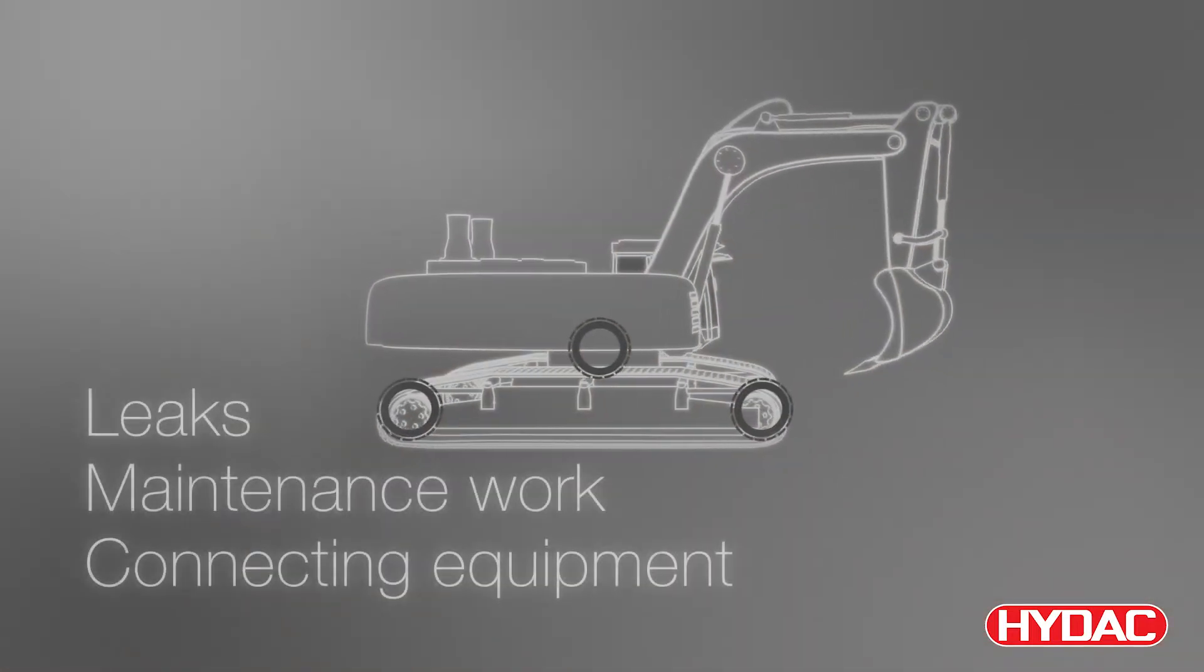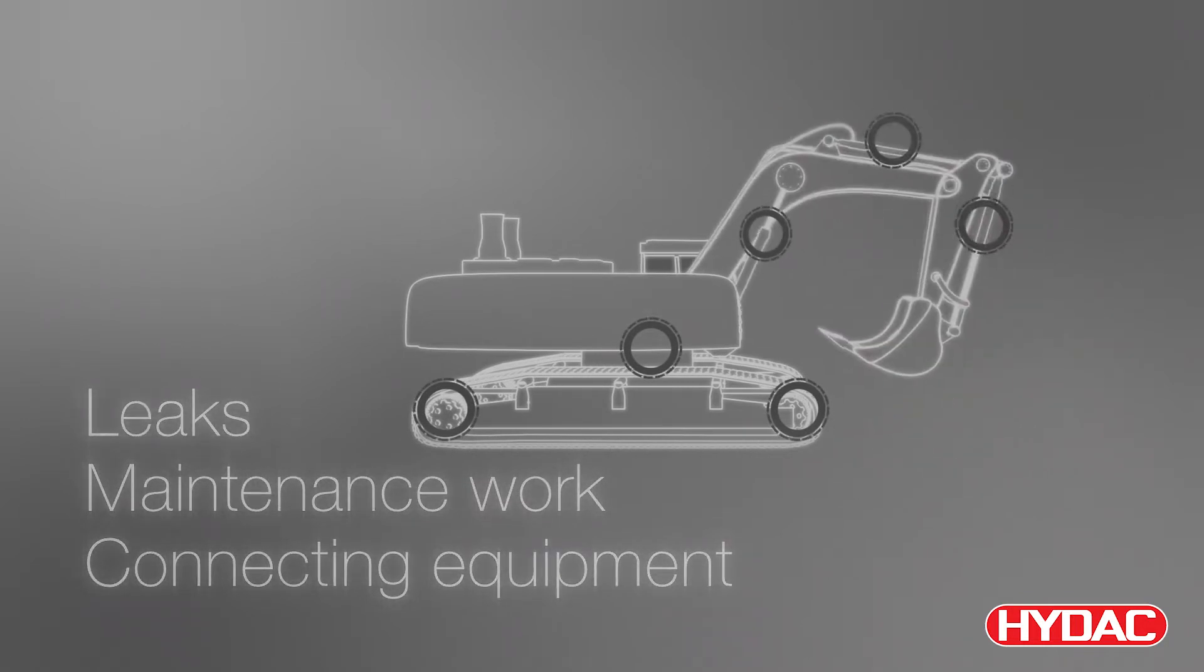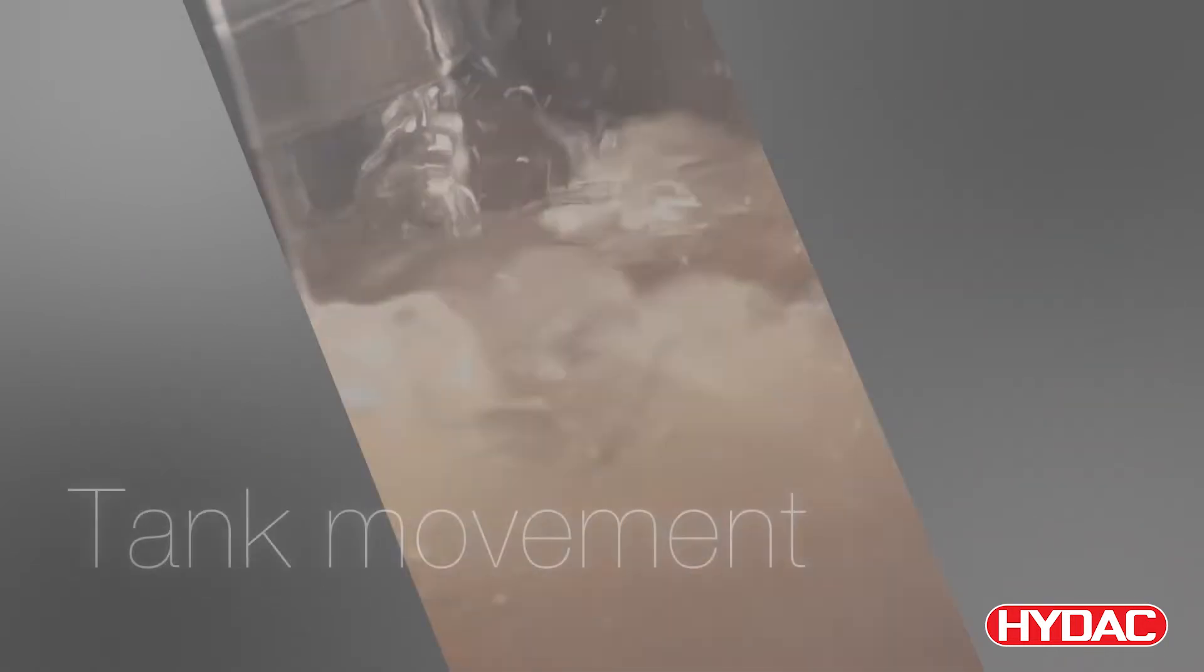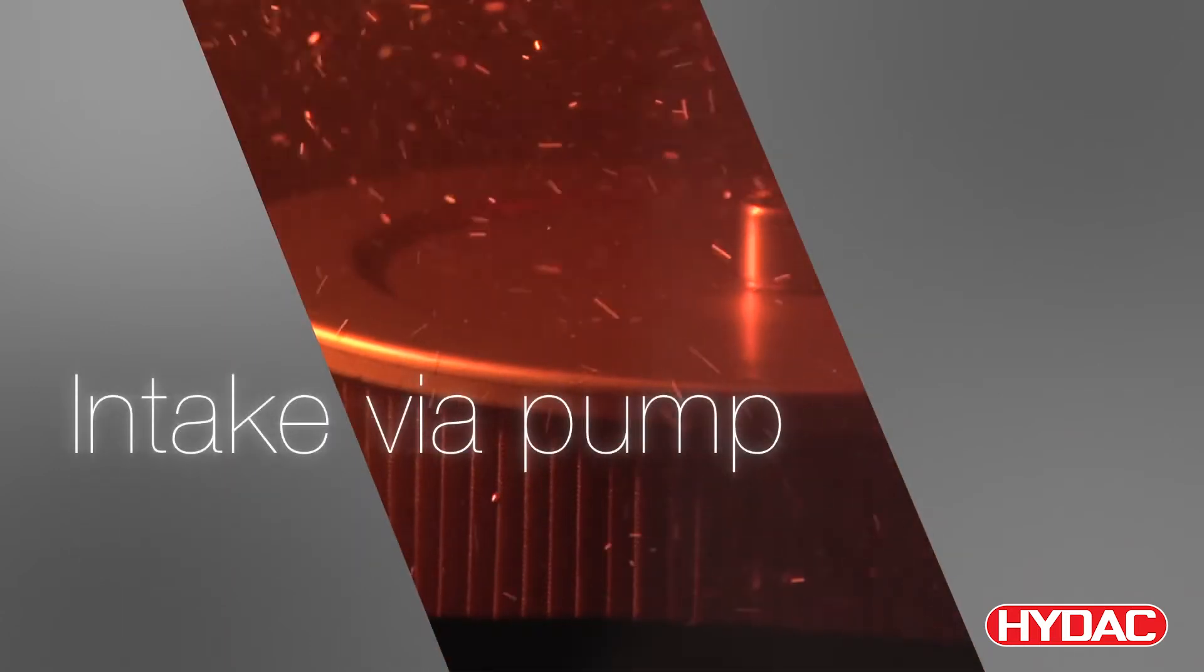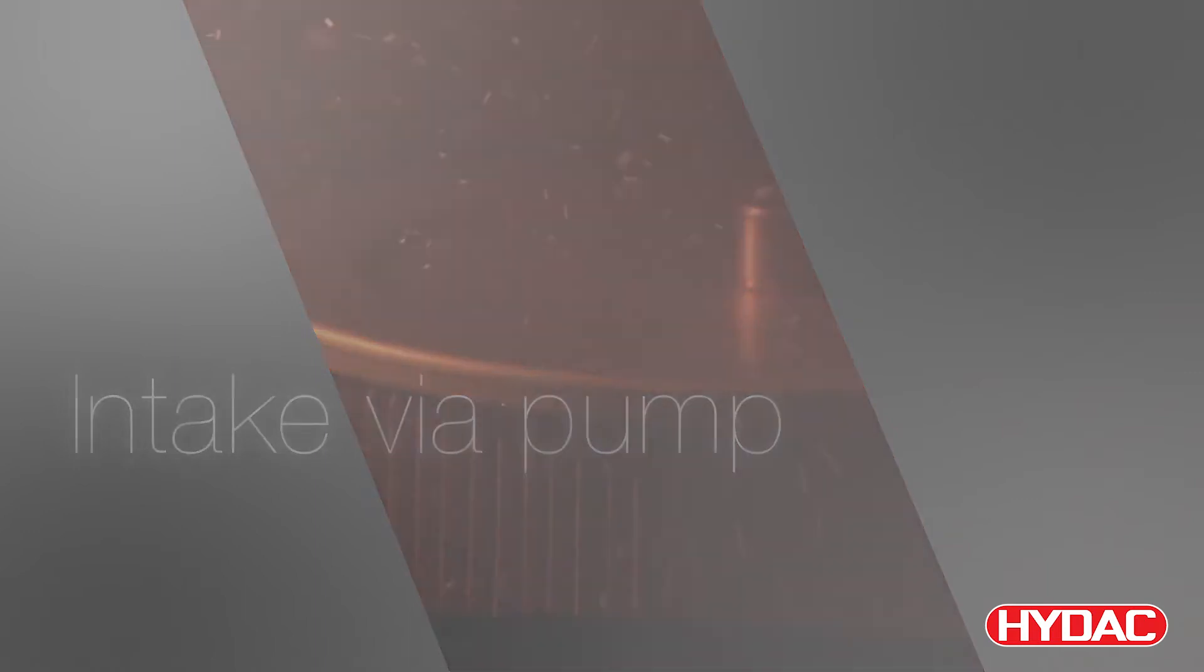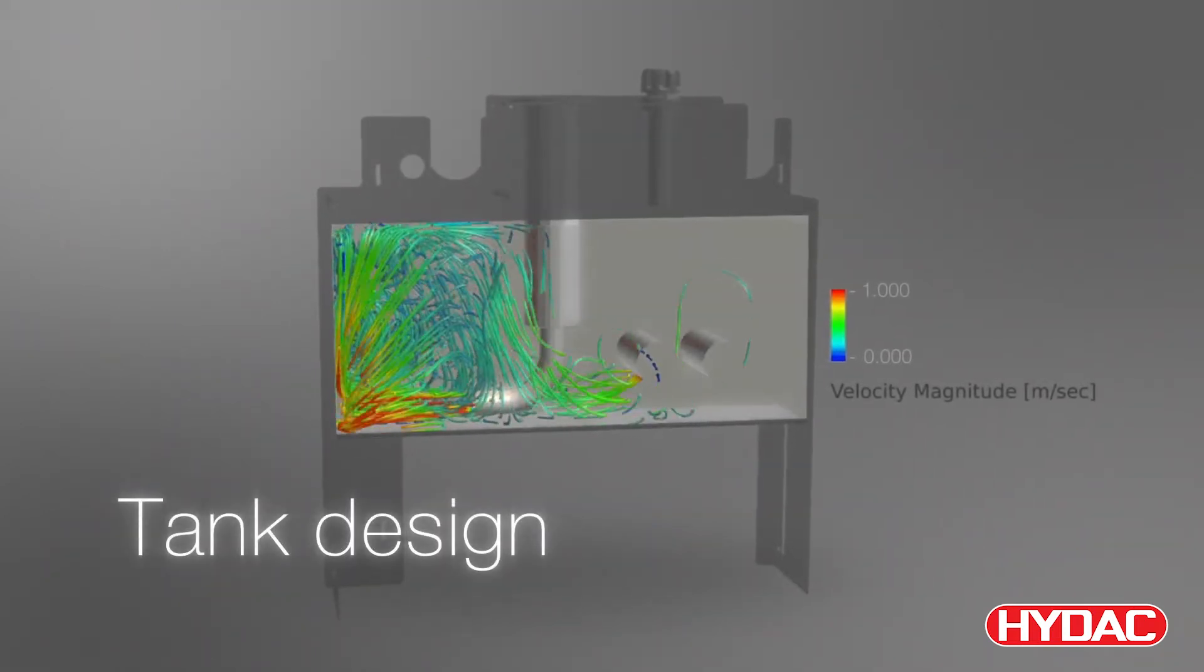But how does air get into the operating fluid in the first place? Air can enter through damaged cylinder seals during maintenance work or when equipment is connected, by liquid sloshing in the tank, by the pump taking in air, or as the result of flawed filter tank designs.